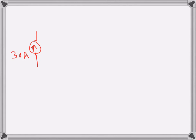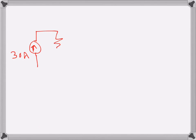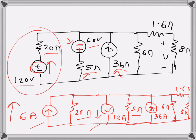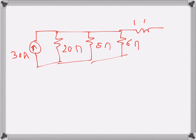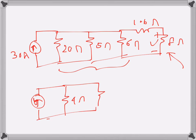Parallel current sources can be added or subtracted depending on direction. We also have three parallel resistances: 20 ohms and 5 ohms from the converted sources, and the existing 6 ohms. The parallel combination of 20 and 5 ohms is 20 times 5 divided by 20 plus 5, which is 100 divided by 25, giving 4 ohms. Then we still have the 1.6-ohm and 8-ohm resistances in series.